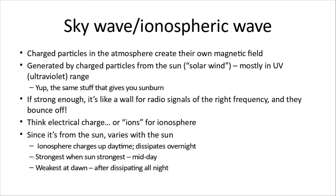Let's talk more about sky wave and ionospheric wave. We have charged particles in the atmosphere that create their own magnetic field, generated by charged particles from the sun — we call that the solar wind. Most of that is in the UV, the ultraviolet range — the same stuff that gives you sunburn. But if it's strong enough, it's like a wall for radio signals at the right frequency; the signals bounce off that wall. Think ions for ionosphere. Since it's from the sun, it'll vary with the sun — the ionosphere charges up during the daytime and dissipates overnight. It's strongest at midday and weakest at dawn after dissipating all night.